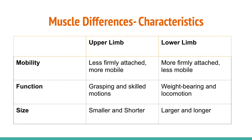The upper and lower limbs differ in size, function, and degree of mobility. The upper limbs function as non-weight bearing limbs, used primarily to position the hand for manipulation and fine motor skills. Therefore, they are less firmly attached and have shorter, smaller muscles than the larger muscles of the lower limb. The muscles of the lower limb's main purpose is to support and balance the weight of the body.